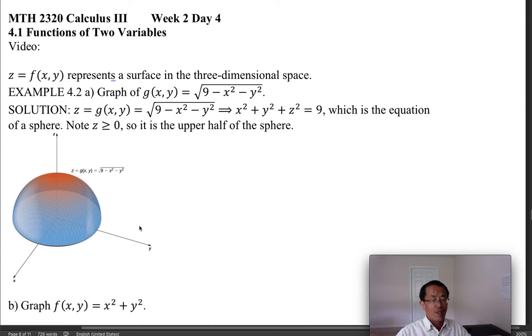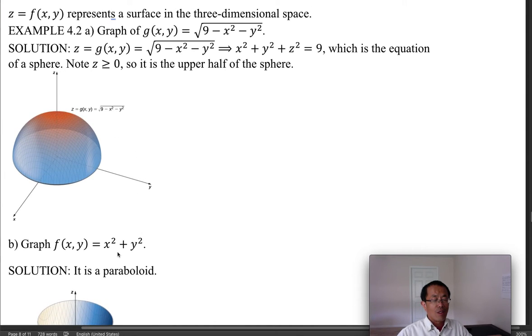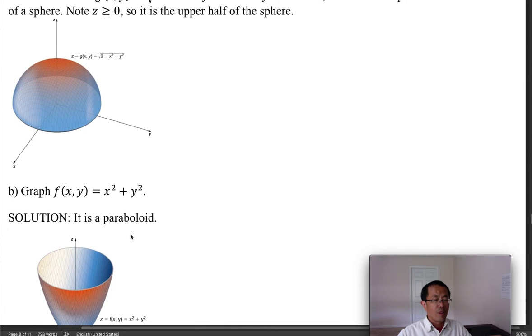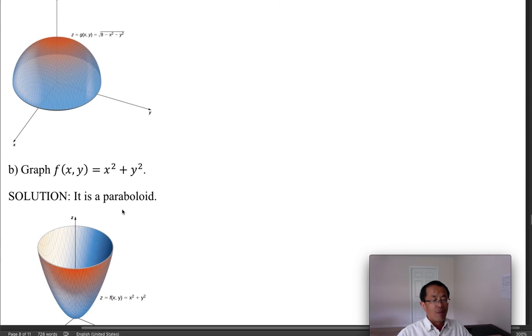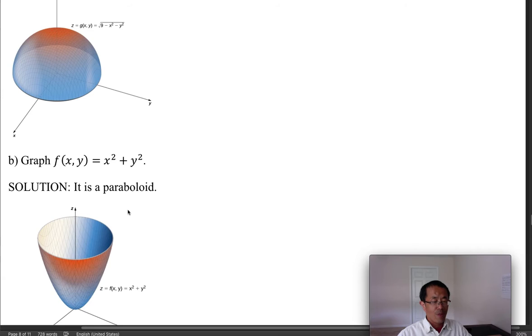The next one might look a little more complicated, and there are different ways to approach this type of graph. What I want to tell you here is it is a paraboloid. Basically, you can consider, along the, consider maybe y equals zero, so z equals x squared. In that case we're going to have a parabola around the z-axis. Or maybe you can set x equals zero, then z equals y squared. We have another parabola centered around the z-axis, and then you rotate the parabola all around the z-axis and you're having a surface. The surface is called a paraboloid. It is formed by parabolas.